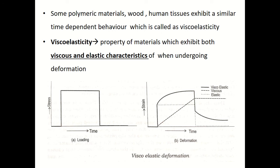Now look at the strain versus time. This curve indicates how the loading trend changes with time, and this graph shows how the deformation trend changes with time — deformation being strain, since it is the change in deformation divided by original deformation. The continuous line shows the trend for a viscoelastic material, and you can also see the trend for an elastic material for comparison.